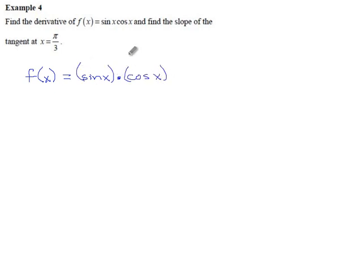It's a product, which means the derivative is going to require the product rule. We have to do first d second. The derivative of cosine is negative sine.